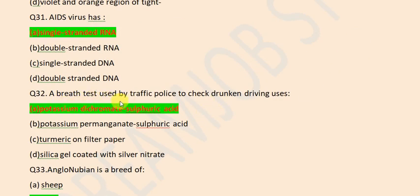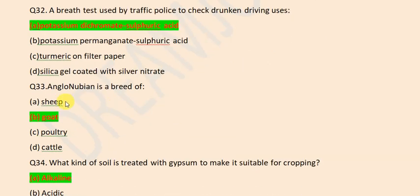A breath test used by traffic police to check drunken driving uses potassium dichromate and sulphuric acid. Anglo-Nubian is a breed of goat.